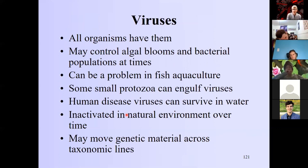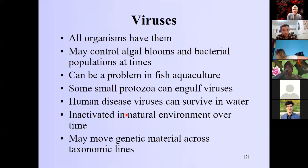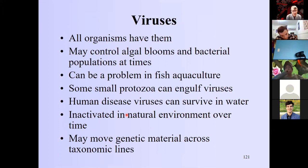Just like with other organisms, if viruses couldn't be cycled back into the food web, everything would end up in viruses — all the carbon, nitrogen, and phosphorus, since viruses are made of DNA or RNA with proteinaceous or lipid coats. But some protozoa — heterotrophic nanoflagellates — can engulf and eat viruses. These very small flagellates eat really tiny particles and are quite important.